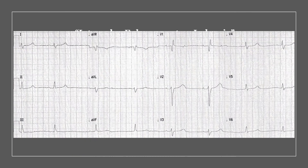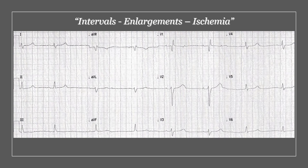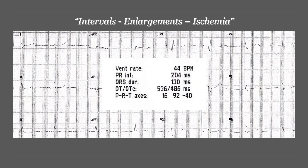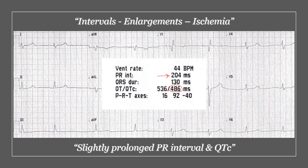Moving on to the intervals: the PR interval is 204 milliseconds, so we have a prolonged PR interval — more than 200. The corrected QTc is 486, so it is slightly prolonged as well. From the enlargement point of view, there is not really much to say on this ECG. And from the ischemia point of view, there is no significant ST elevation, depression, or T wave changes. In summary so far, we have a prolonged PR interval and QTc in addition to what we had before.